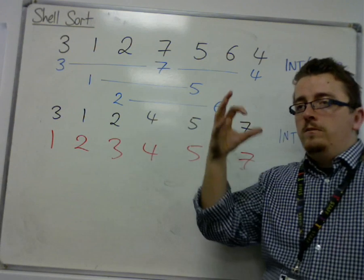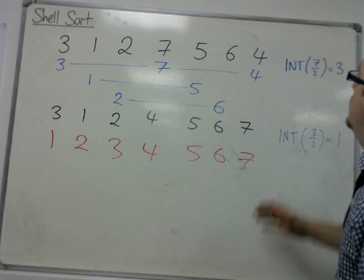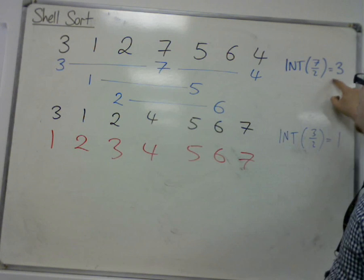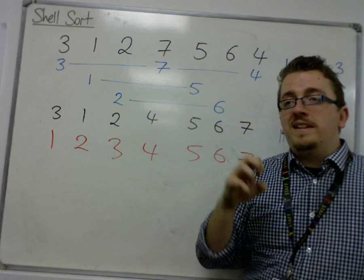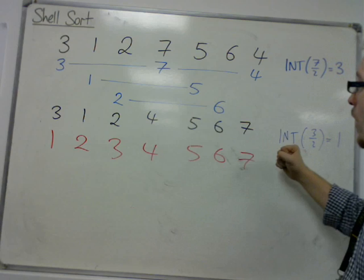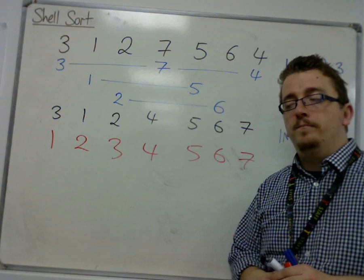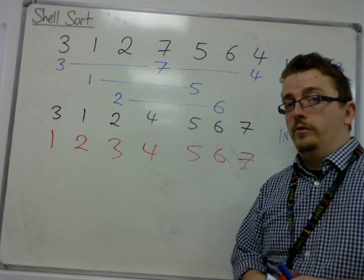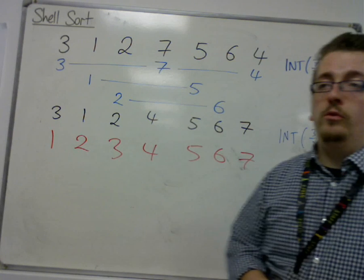Any large list of numbers, however many you start with, you keep halving the integer part of the previous number. And when you get down to 1, you have this 1 sublist that you then finally shuttle sort. So that is how Shell Sort works.